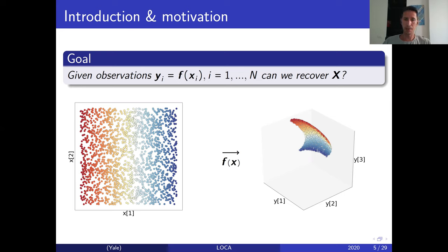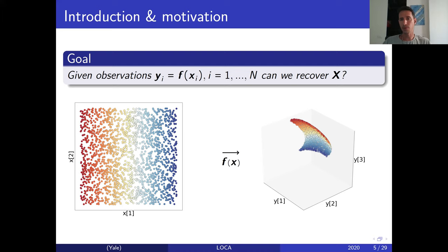In this example, on the left we have a latent domain x — this is the manifold, the cell surface — it's just a square in this case, and we observe different states at different locations on this square. After applying the measurement function f, which places this square on a patch of the unit sphere, this function is invertible — it is a diffeomorphism. Using these samples in R^3, can we perfectly recover x which is in R^2?